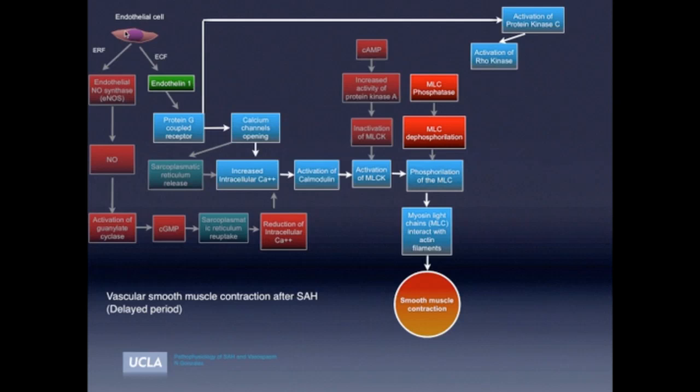And by activation of the protein kinase C, several activated protein kinases are going to occur, including the activation of the Rho kinase, which inhibits the myosin light chain phosphatase, removing the possibility of the dephosphorylation and increasing the permanence or persistence of contraction in the smooth muscle cell.